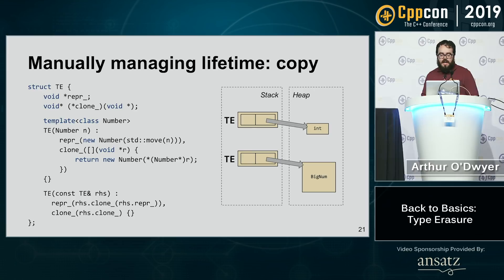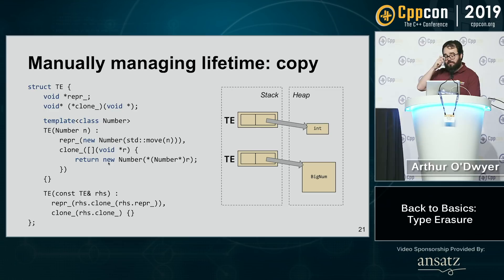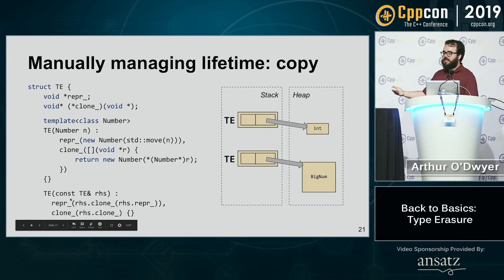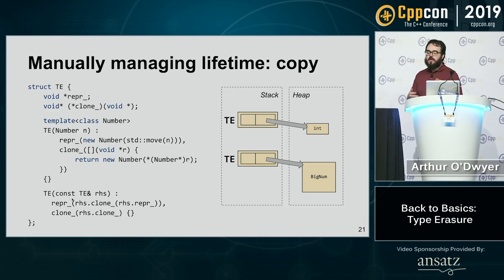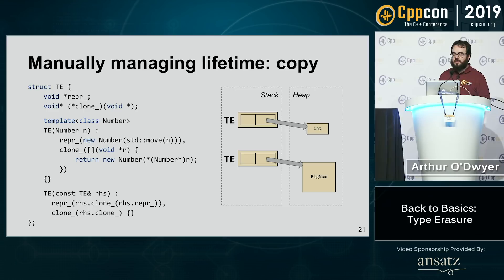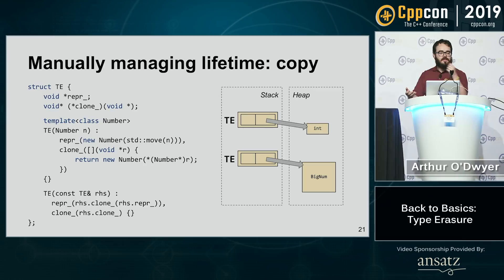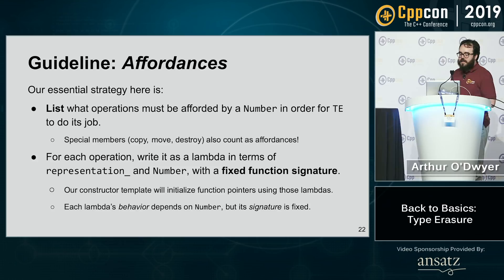For copy, I make a lambda that takes a representation of a number, casts it back, calls the copy constructor, and allocates that object on the heap — I call this 'clone' by analogy with Java. The copy constructor of type_erased_number calls this clone affordance: it copies the clone function pointer over, and initializes the void-star representation with the result of calling clone on the right-hand side's representation. Behavior plus representation — put them together.